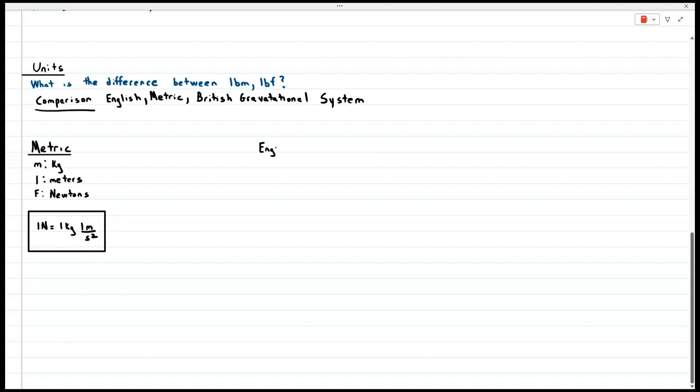Let's do the same for the English system of units. The mass is in pound mass, the length is in feet, and the force is in pound force. A pound force is the amount of force necessary to accelerate a pound mass at a rate of 32.2 feet per second squared.